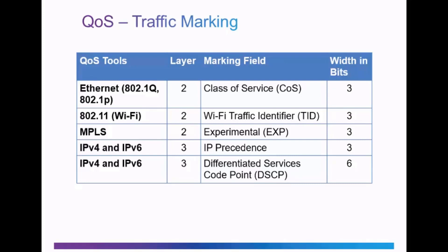At Layer 3, with IPv4 and IPv6, we use the TOS and traffic class fields using IP Precedence, or IPP, and DSCP, the Differentiated Services Code Point. With Layer 3 traffic marking, the marking can go from router to router and therefore the QoS marking can be carried end-to-end across the network.